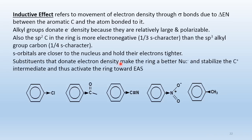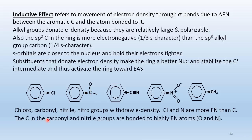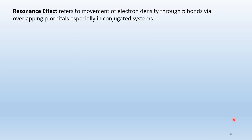Chloro, carbonyl, nitrile, and nitro groups all withdraw electron density by induction. Nitrogen and chlorine are more electronegative than carbon. Carbonyl and nitrile carbons are sp2 and sp hybridized respectively, and more importantly bonded to electronegative oxygen or nitrogen atoms, making them electron-withdrawing by induction from the aromatic ring.